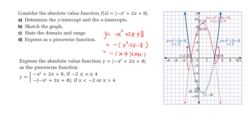If we want to express this as a piecewise function: when x is between negative 2 and 4, the graph is positive, so it's itself. If x is smaller than negative 2 or greater than 4, the value is negative, so we apply the negative — that is, negative a.